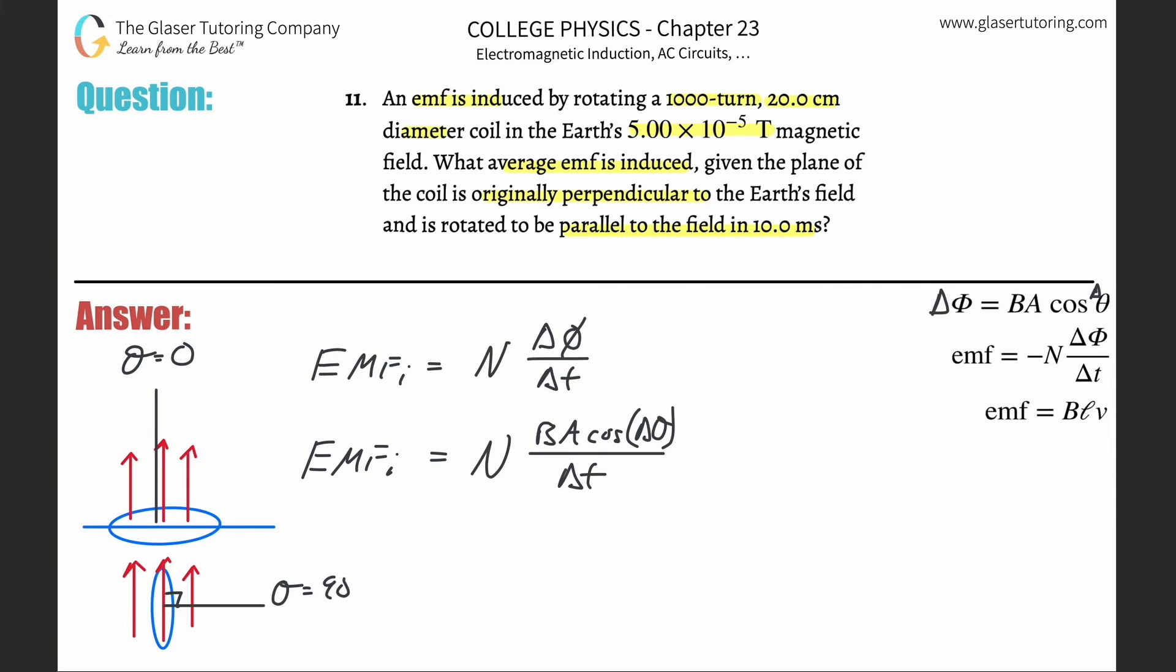So the question then is, what is then the change in the magnetic flux? Well, it would then be the original magnetic flux minus then the final, or the final magnetic flux minus the initial. It doesn't really matter. The magnitude is what is important. That's just the directional thing.